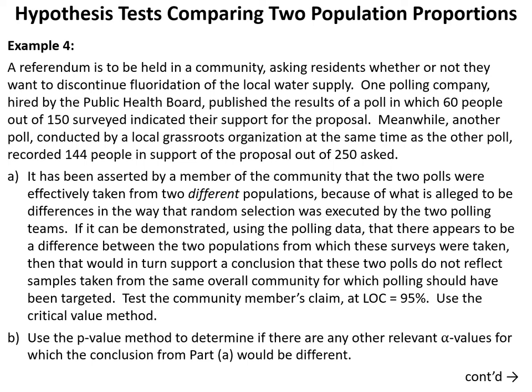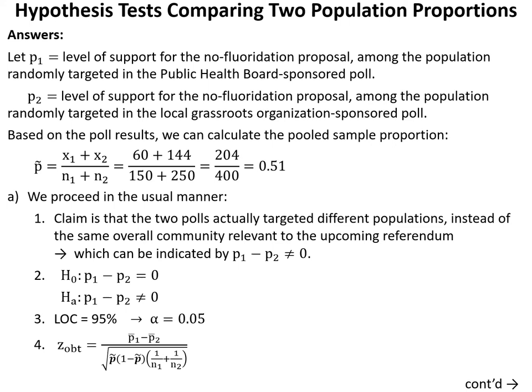Part B uses the p-value method to determine if there are other relevant alpha values for which the conclusion from Part A would be different. We let P1 equal the level of support in the population targeted by the public health board poll. We first calculate the pooled sample proportion P-tilde: x1 plus x2 over N1 plus N2 equals 60 plus 144 over 150 plus 250, giving us 204 over 400, so P-tilde equals 0.51.